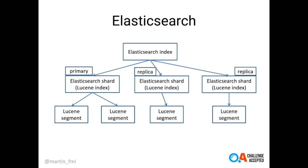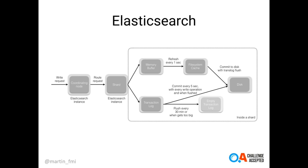Internally, Elasticsearch interacts with Lucene by creating a number of Elasticsearch shards. When you create an Elasticsearch index, you need to specify the number of primary shards that distribute the data in the Elasticsearch cluster, and the number of replica shards that replicate data across nodes in the cluster. Each Elasticsearch shard is a Lucene index, and that Lucene index stores data in one or more Lucene segments, which are the actual physical files on the file system.